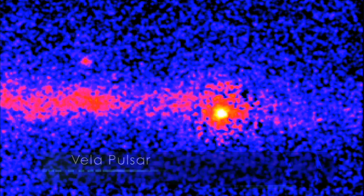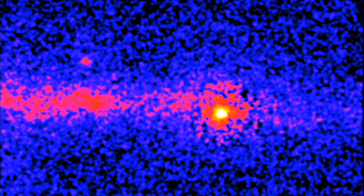This animation of LAT images shows the on-again, off-again nature of the Vela pulsar. Its gamma rays actually cycle about 20 times faster than shown here.